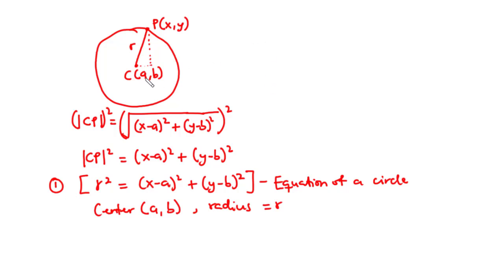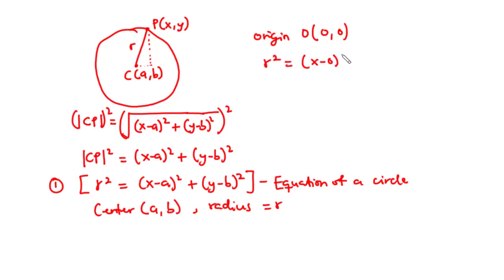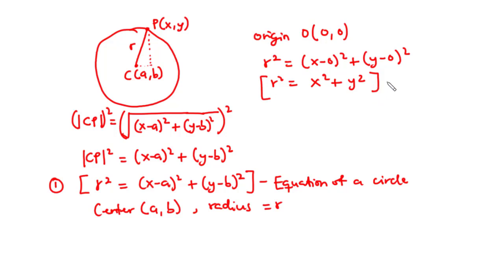Assuming that the center of the circle is at the origin, that is point (0, 0), then we substitute 0 in place of A and B. So R² = (X − 0)² + (Y − 0)², which becomes R² = X² + Y². This is the equation of the circle when the center is at the origin.